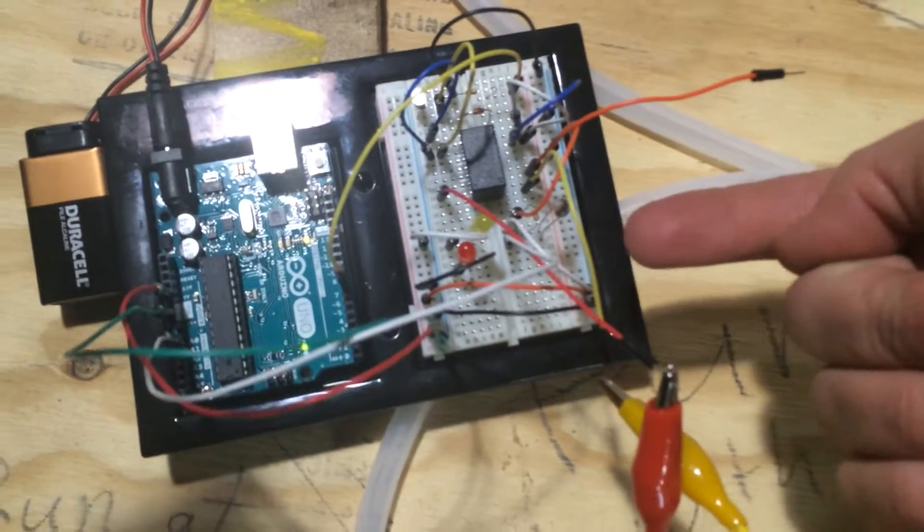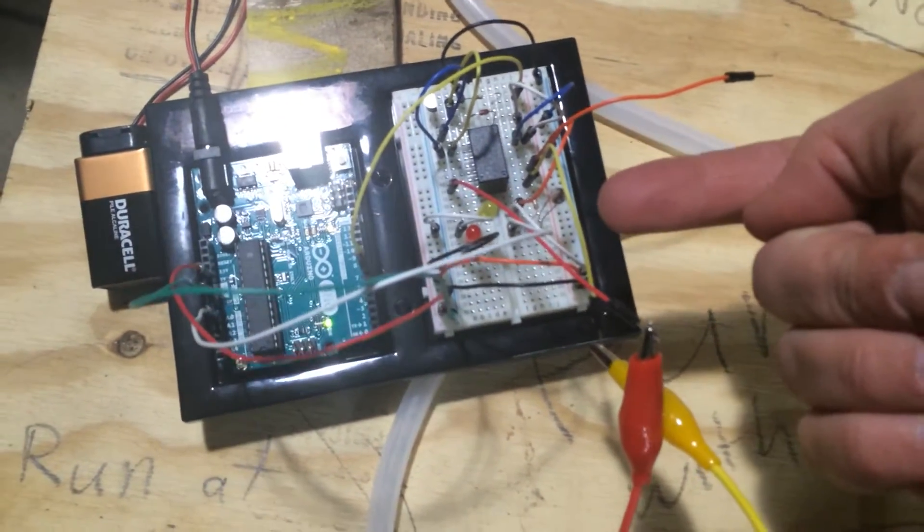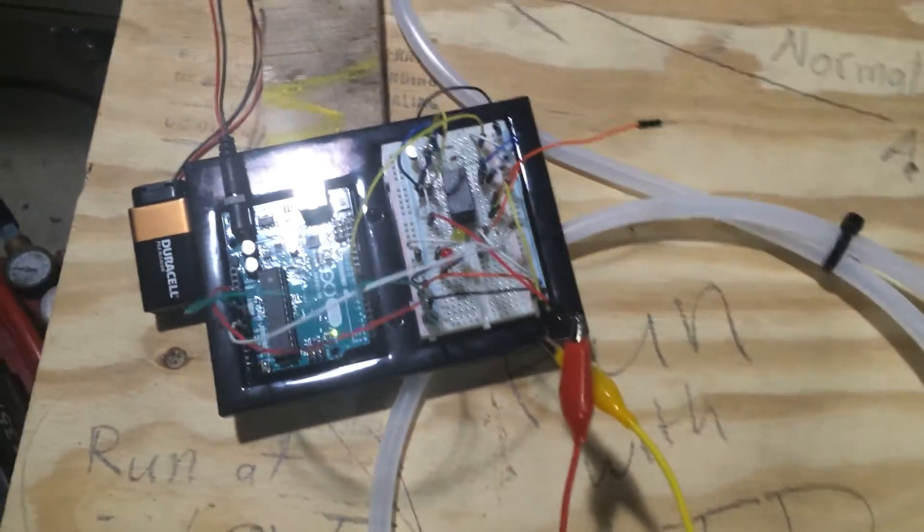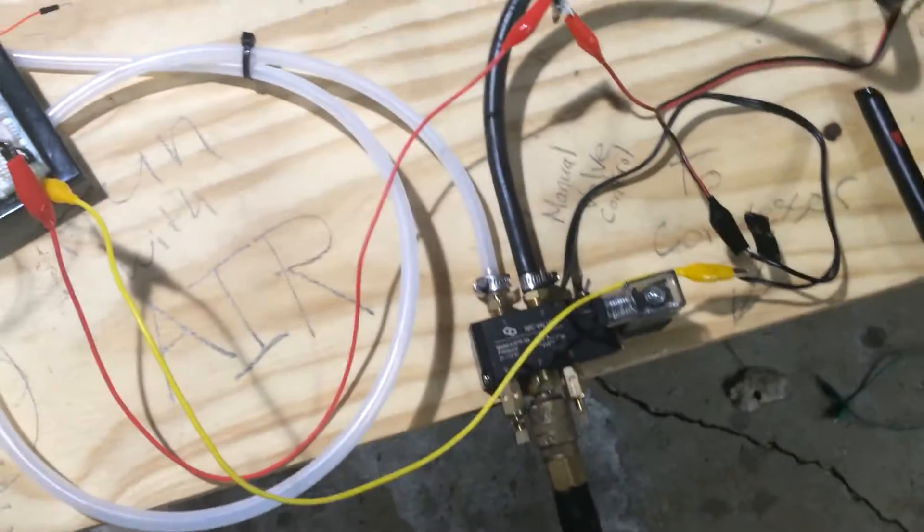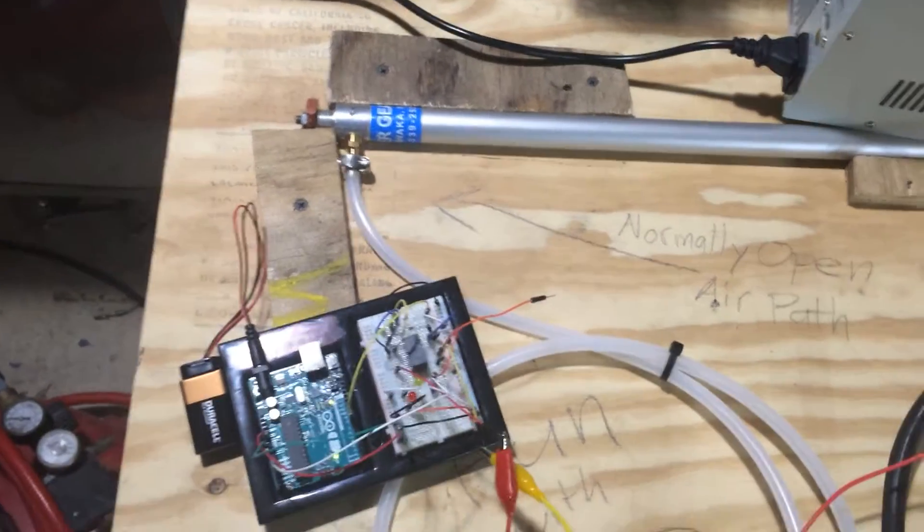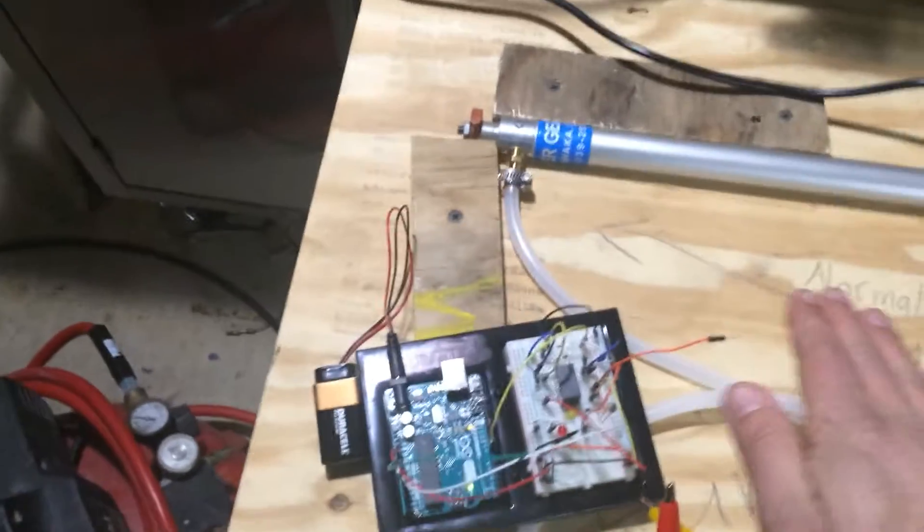And basically it's programmed so that if that light sensor senses darkness, it flips that relay. And that's going to open that air valve and that's going to open up that air cylinder. So if I just put my hand there...